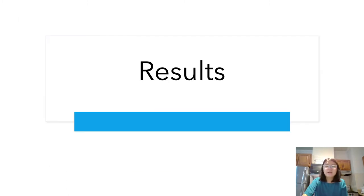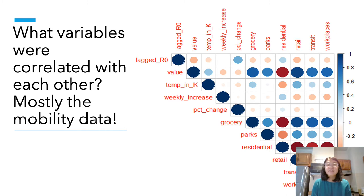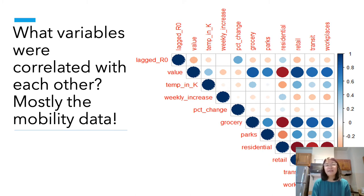Now I'm going to talk about the results — specifically which factors I found were correlated with the spread of coronavirus disease. My first result is a correlation plot showing what variables were correlated together. We can see that the strongest correlations were the mobility data, which correlated very strongly together, as shown by the dark blue circles. However, there was certainly a negative correlation between mobility data and R0, especially when R0 was lagged by two weeks to account for the incubation period of the virus and delays in testing.